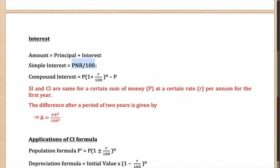Simple interest is calculated by the formula PNR upon 100, where P is the principal which is given or taken, N is the number of years, R is the rate of interest, divided by 100.